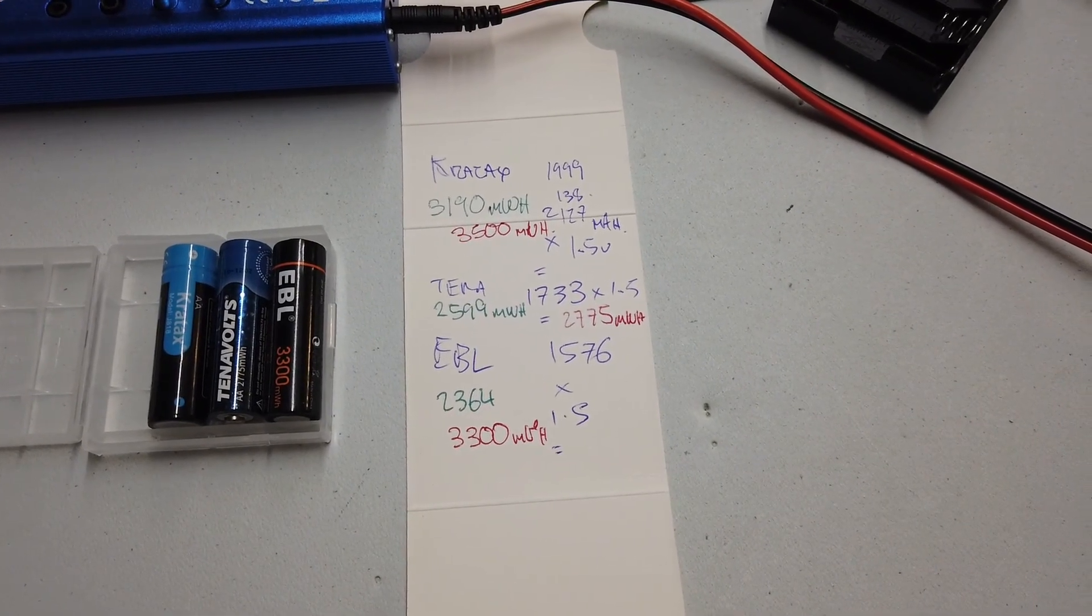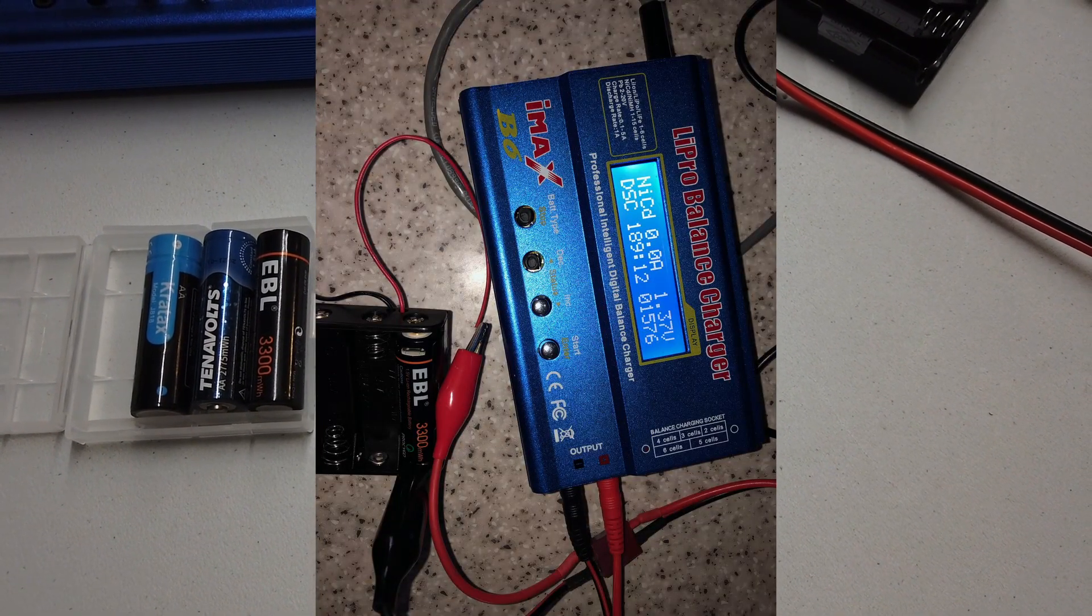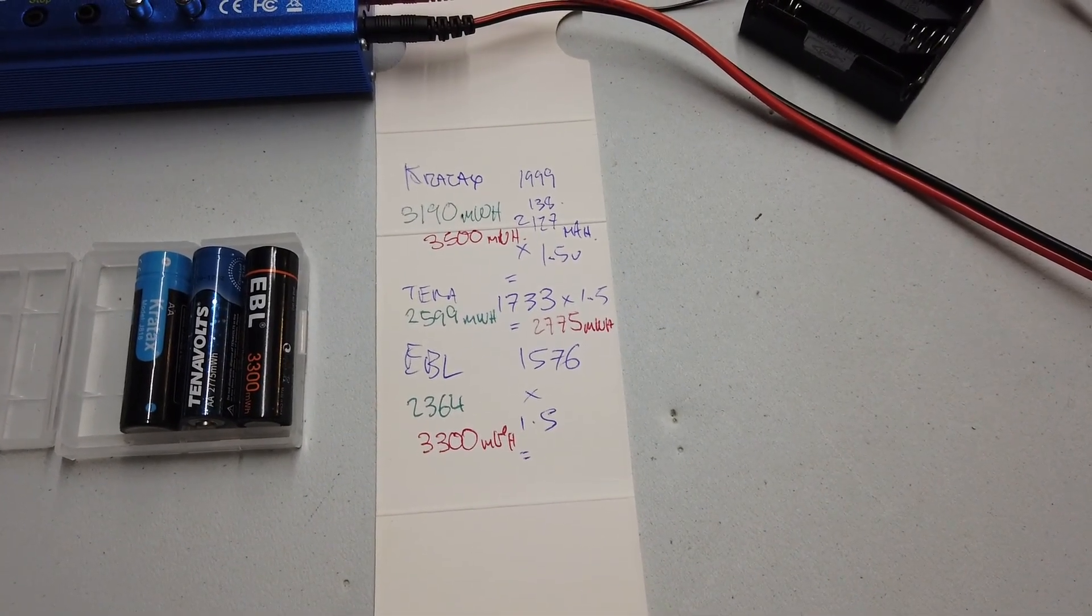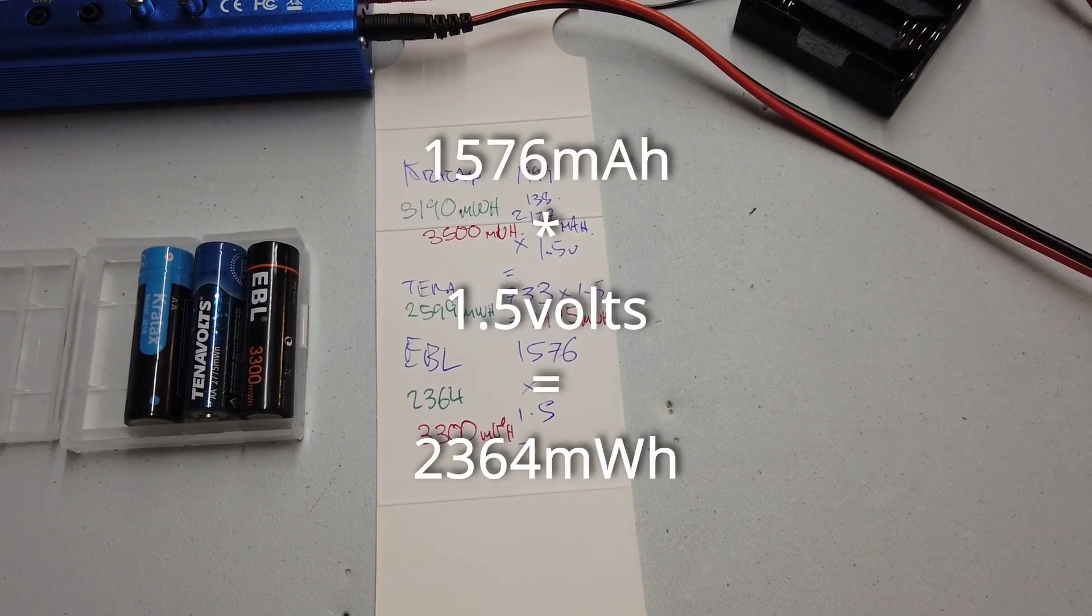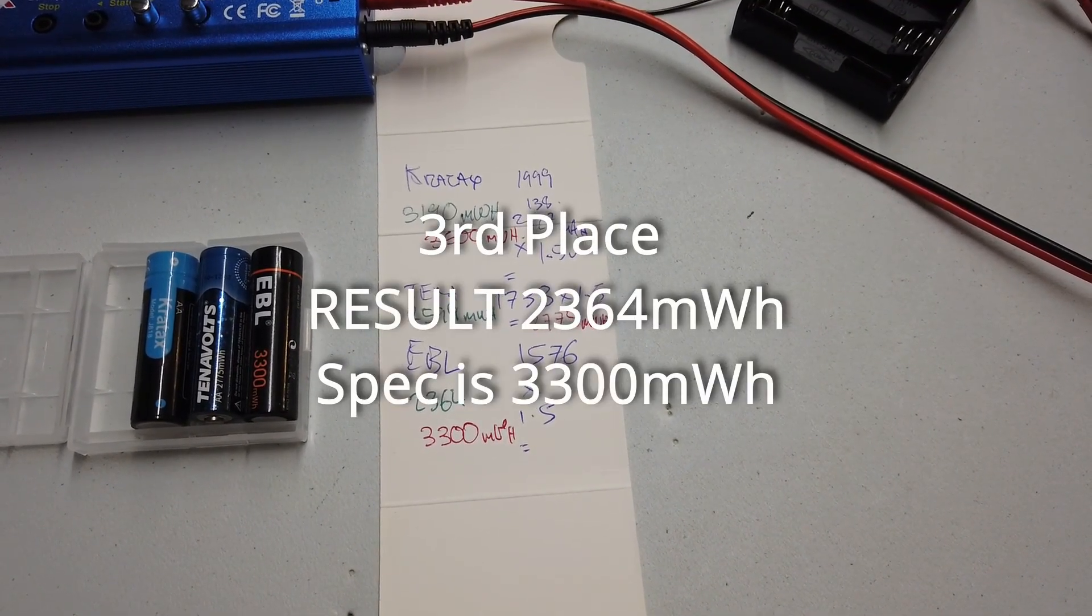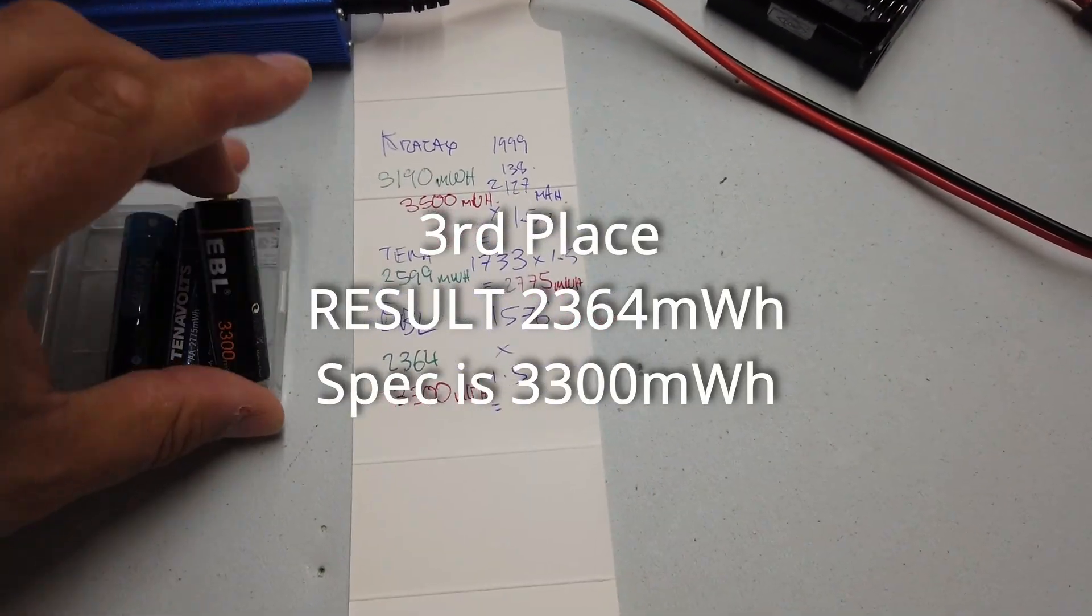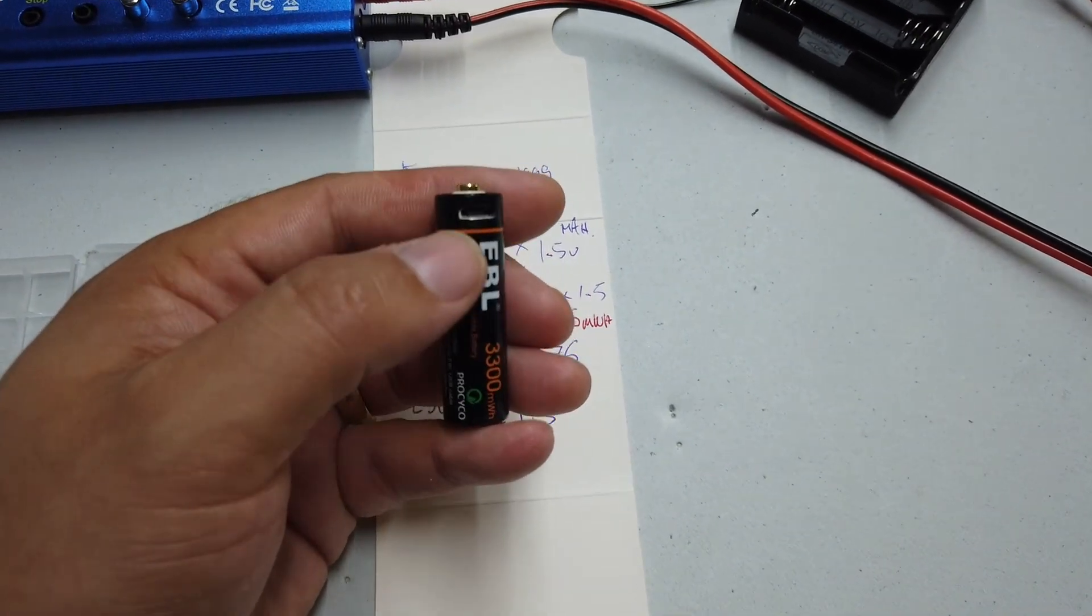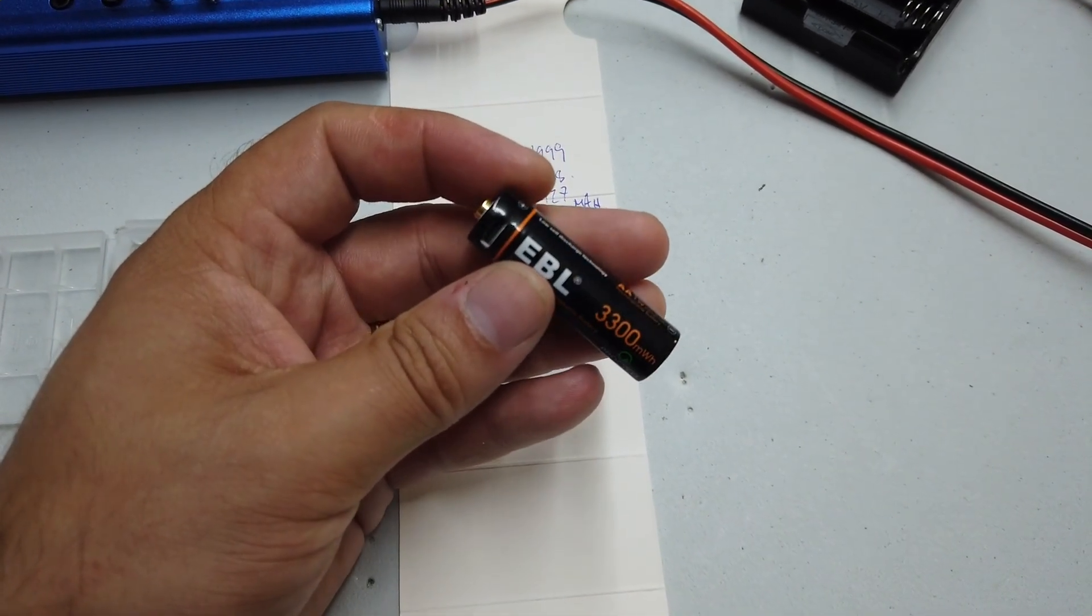EBL on the other hand came in last place. With their manufacturer's specifications showing 3300 milliwatt hours, we got 1576 milliamp hours out of it. Multiplied by 1.5 volts gives us 2364 milliwatt hours, nearly a thousand milliwatt hours off of what was expected. I wonder if the reason behind that is because they can't fit as much lithium in here because they have a charge port as well as electronics. It would be interesting to take some of these apart and see how much actual lithium is in these devices.